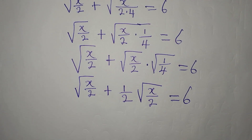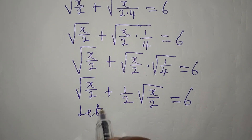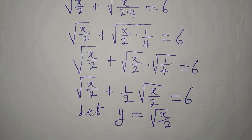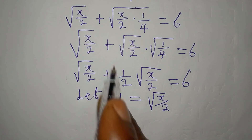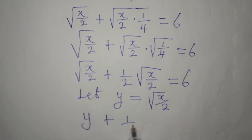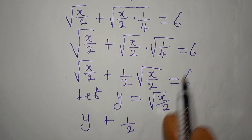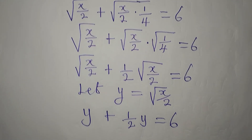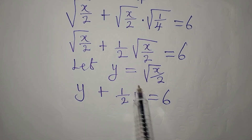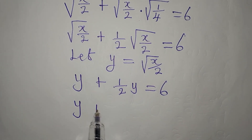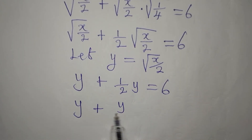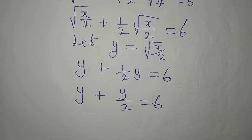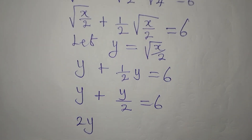Now for the next step, let's say y is equal to the square root of x over 2. So the whole expression now will be y plus 1 over 2 times y, and this is equal to 6. Some learners may not understand this arrangement — you can write this as y plus y over 2 equals 6. They are the same.